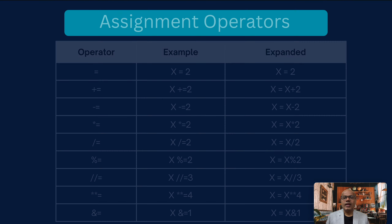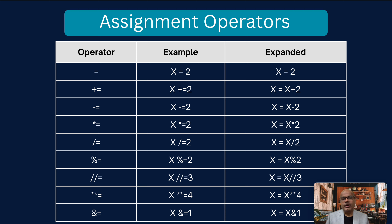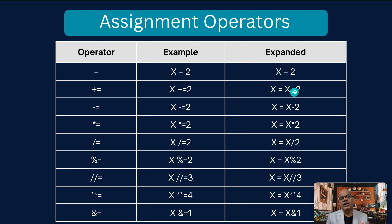Now let's look at assignment operators. The first is the equal-to sign: x = 2 assigns the value 2 to variable x. Another operator is plus-equal-to: x += 2 means x = x + 2, so we are adding the previous value of x with 2 to get the new x.